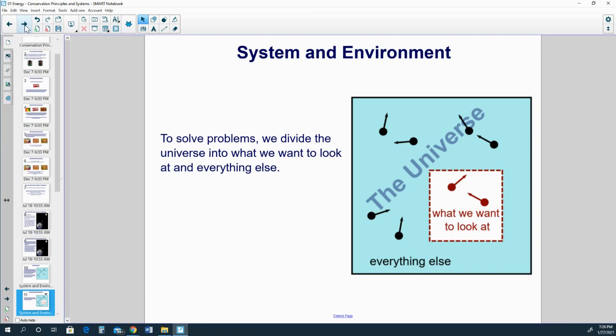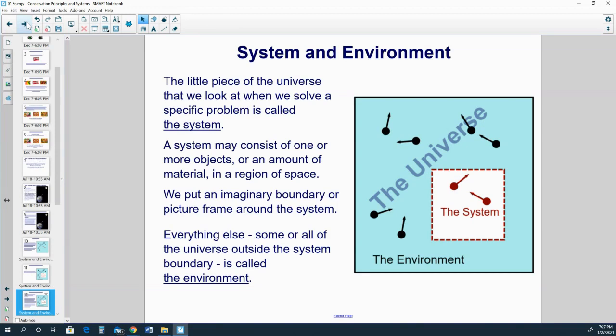To solve problems, we divide the universe into what we want to look at and everything else. The little piece of the universe that we look at when we solve a specific problem is called the system. A system may consist of one or more objects or an amount of material in a region of space. We put an imaginary boundary or picture frame around the system.